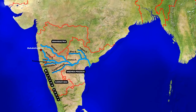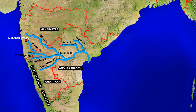The Krishna rises from a spring near Mahabaleshwar in the Western Ghats. It is joined by its left bank tributaries such as Koina, Ghat Prabha and Bhima, and the right bank tributaries include Musi, Paliru, Panch Ganga and Tungabhadra rivers. Flowing through Maharashtra and Karnataka, it finally enters Andhra Pradesh and drains into the Bay of Bengal.